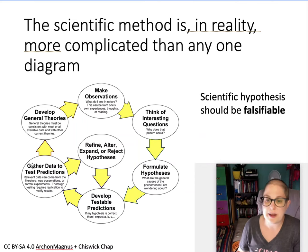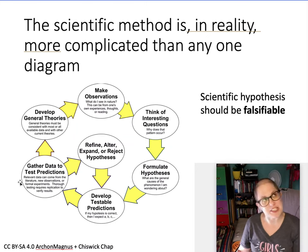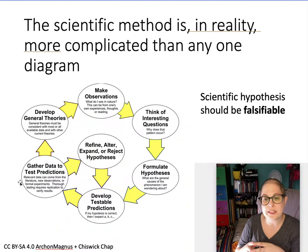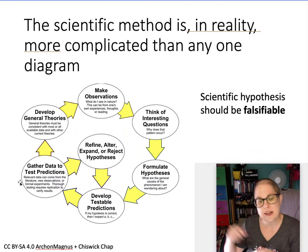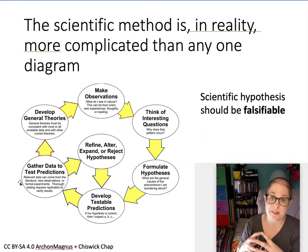You do that by gathering data, testing predictions, running experiments and observations. Being astronomy, we can't do it all by experiment — we can't smash stars together necessarily. We can simulate what stars smashing together might be like in a computer simulation, but we've got to compare that with our observations of what's really happening in the universe. From all of that testing, you can develop a theory. Now, the word 'theory' is a little troublesome, because in everyday language we use it to mean 'I think this is the explanation' — which is really more of a hypothesis. In science, a theory is best thought of as a model.